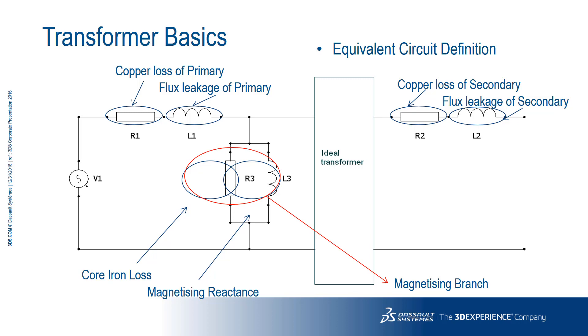And in the core, you'll have magnetizing reactance and losses from the iron. All of these deviations from the perfect transformer can be expressed as equivalent circuit parameters and are often used in transformer specification.